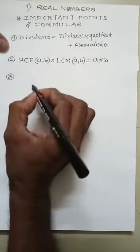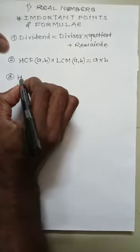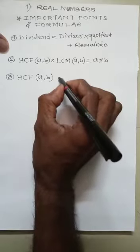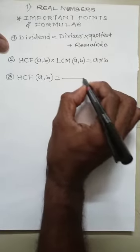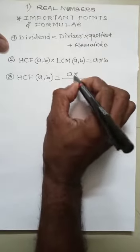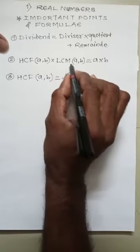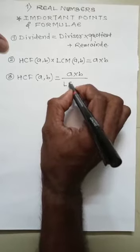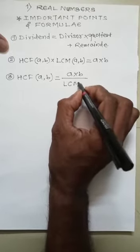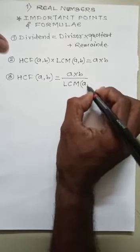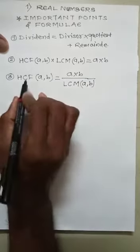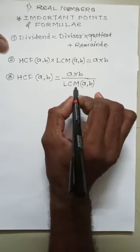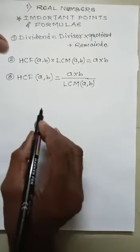Then third formula: HCF of numbers A and B is equal to A times B divided by LCM of A and B. We take the LCM of A and B to the right side. Therefore, HCF of A and B equals A times B upon LCM of A and B.